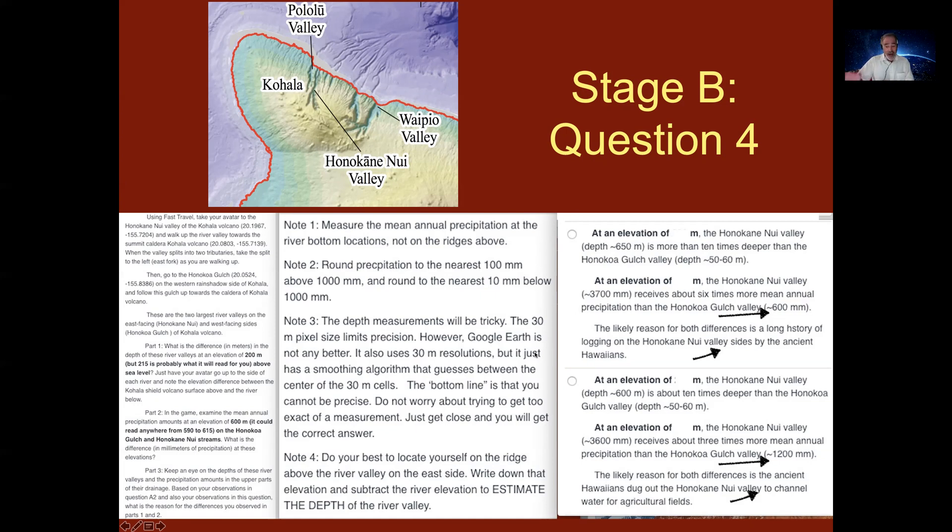So the odds are that there's going to be big differences in the answers. If you look at the answers, there's going to be drastic differences in the precipitation at different locations and the depth at different locations. So this is kind of a hint that you don't have to be particularly precise—wherever your avatar is will be good enough for you to discriminate the correct answer.